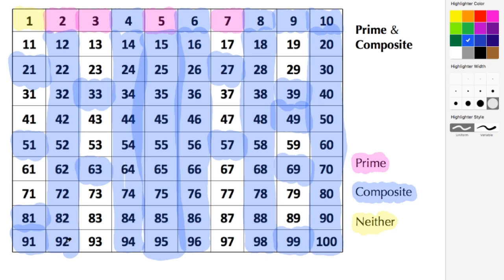11 is prime; we can only divide that by 1 and itself. 13 is prime, 17 is prime, 19 is prime, 23 is prime, 29 is prime, 31, 37.